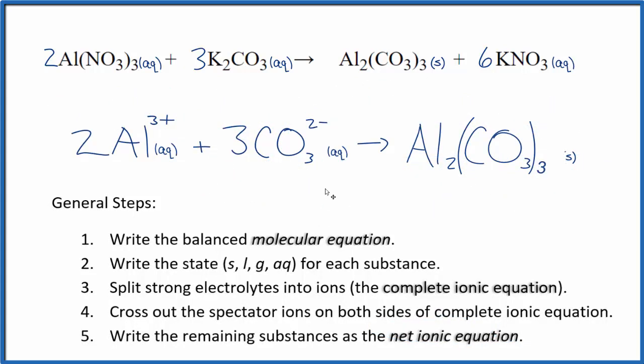So this is the balanced net ionic equation for AlNO3 3 plus K2CO3. You'll note charges balance: 2 times 3 plus, that's 6 plus, 3 times 2 minus, 6 minus. All of this adds up to zero, net charge of zero. This is a neutral compound, net charge of zero. Charge is conserved.